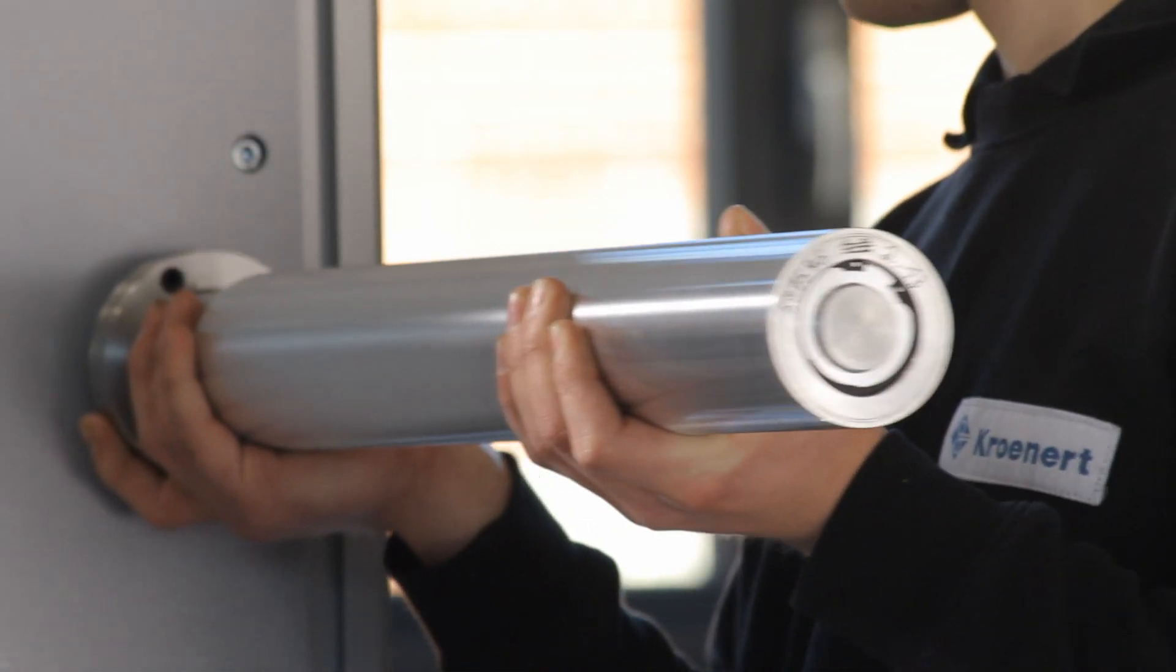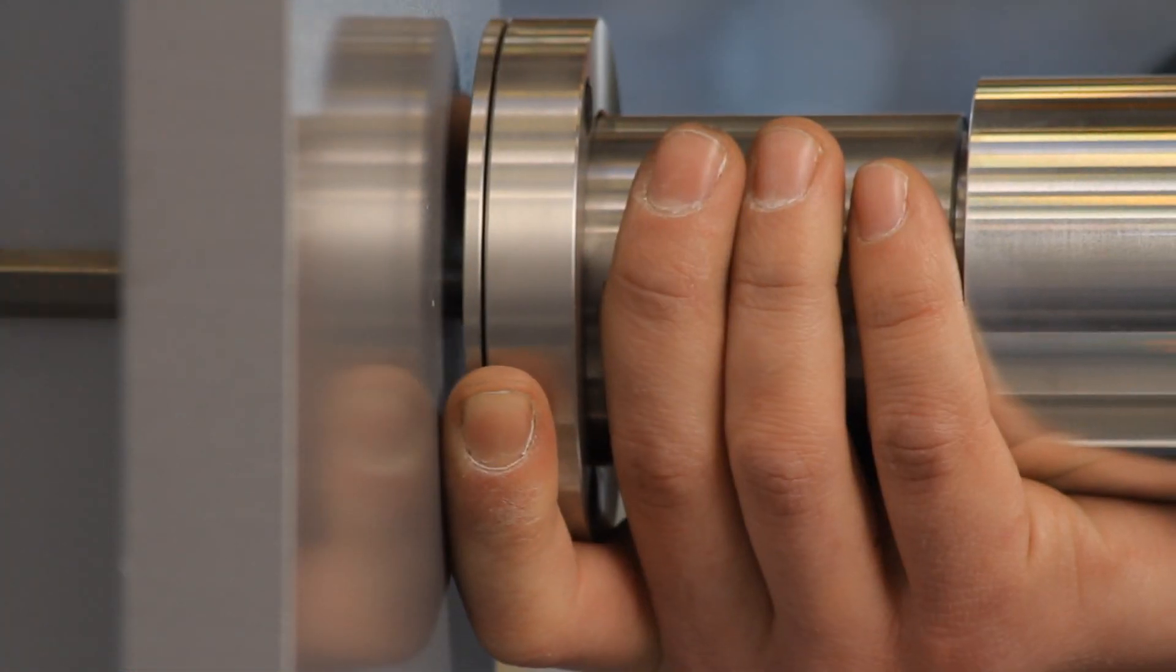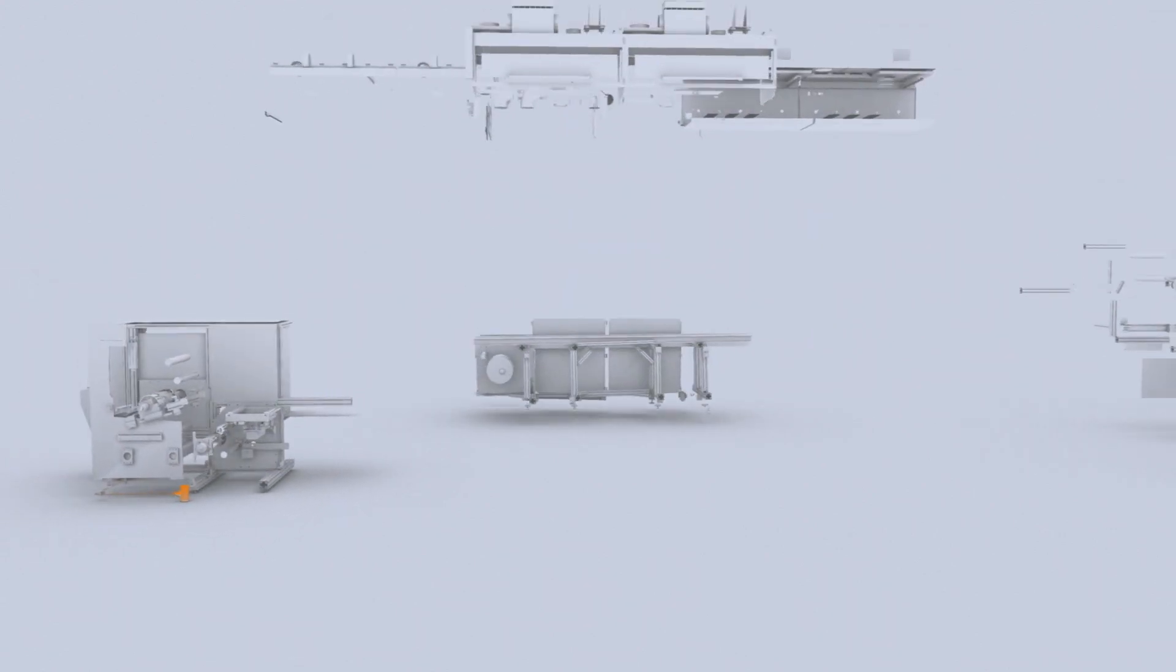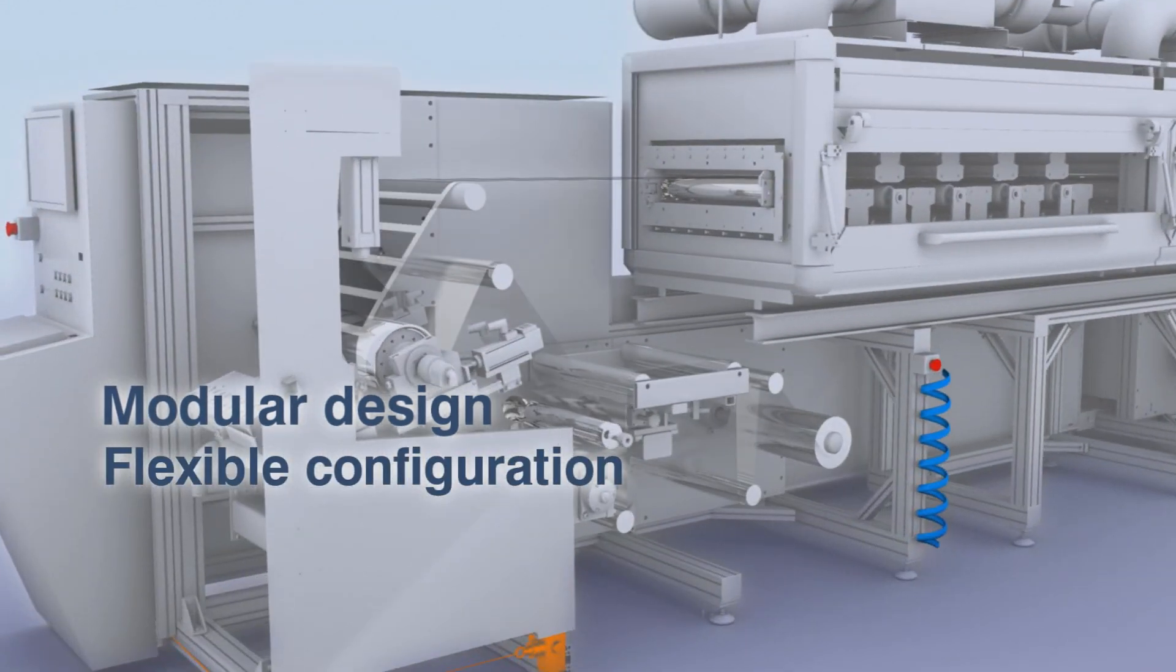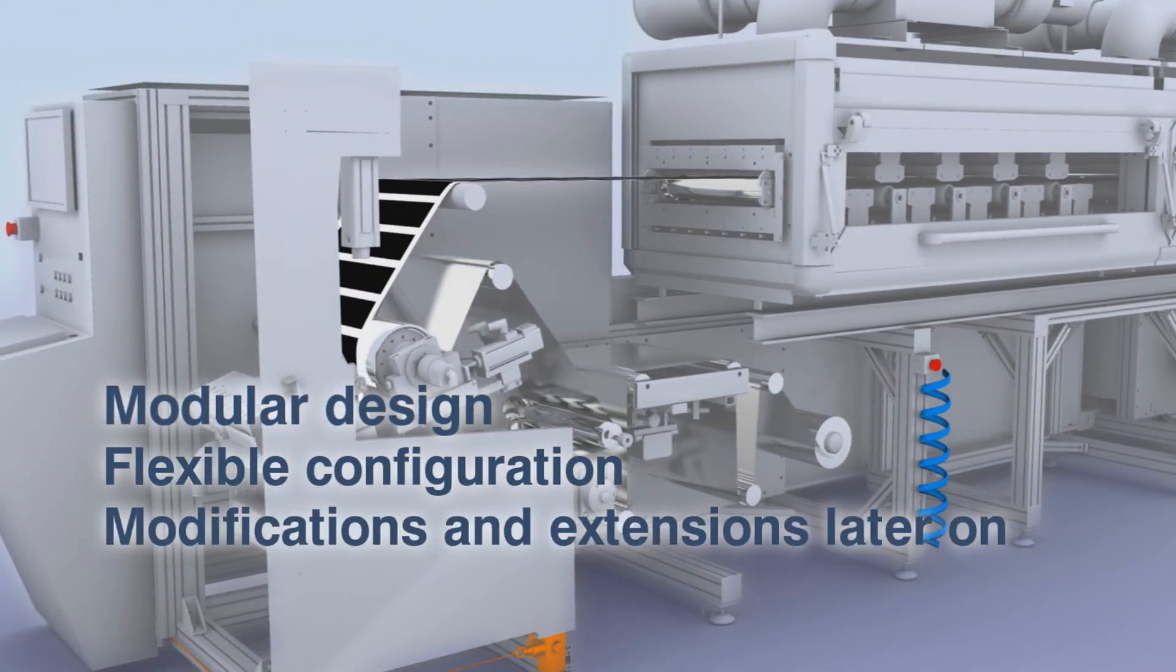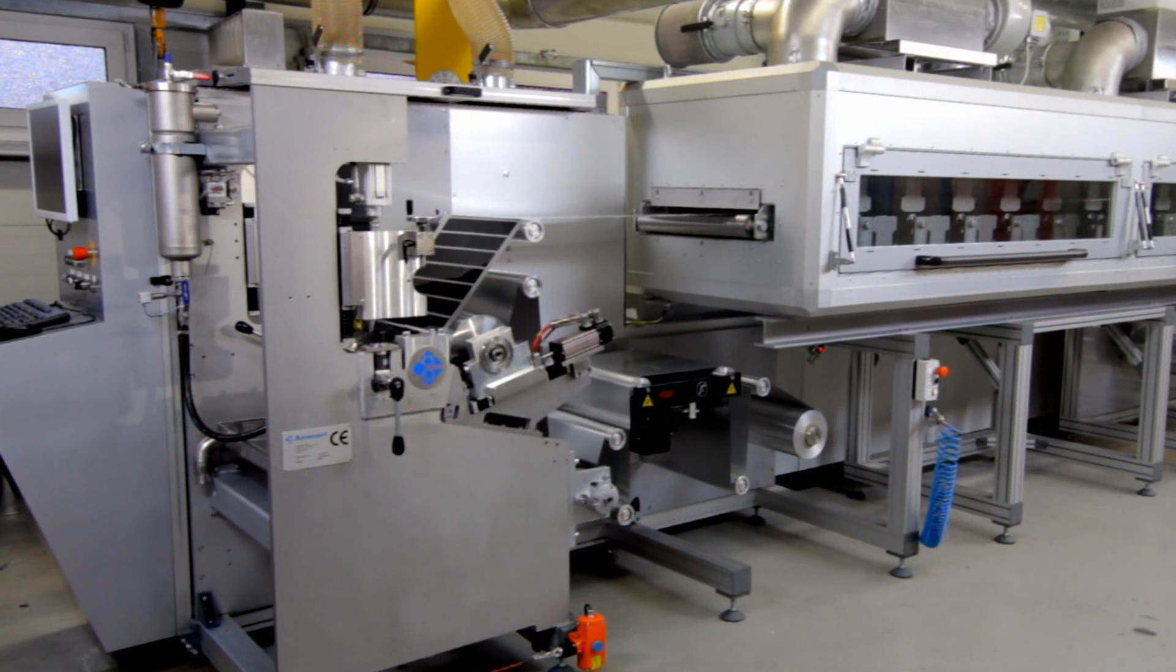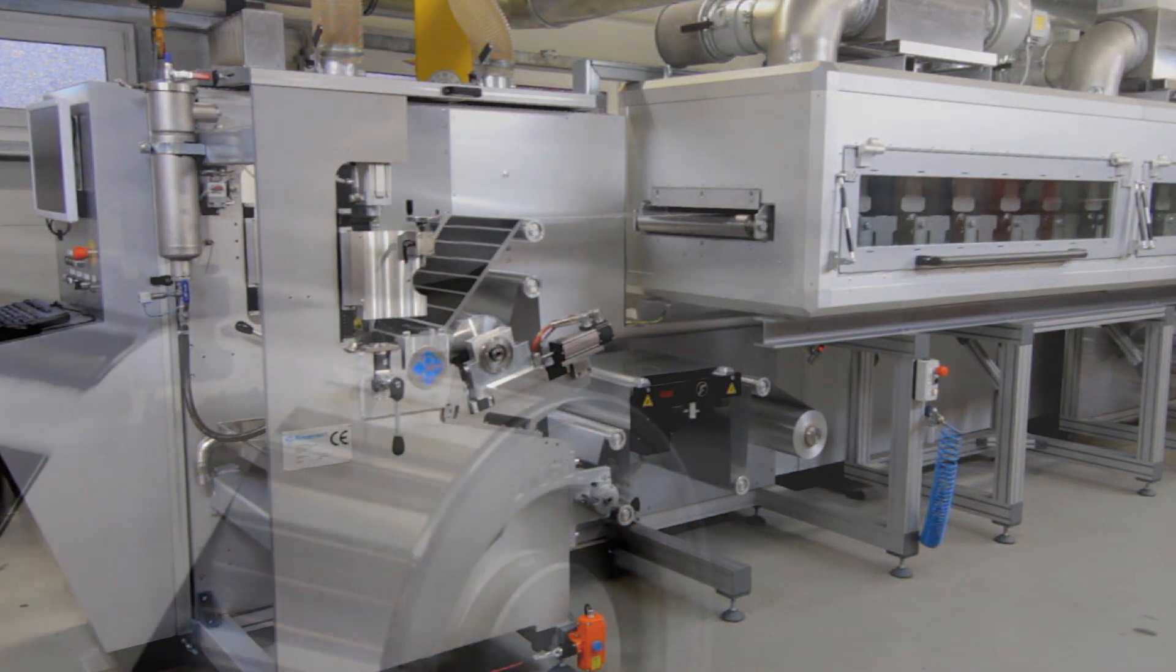We build machines which can print and coat almost any web-like material with precision and efficiency. The LabCo was designed specifically for pilot scale testing and small serial production. Its modular design makes it easy to modify to our customers' every need, even later on. We understand that needs change.